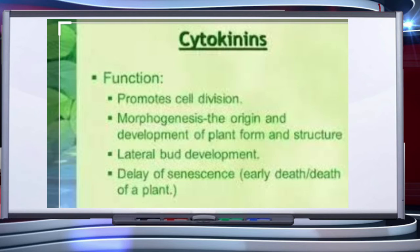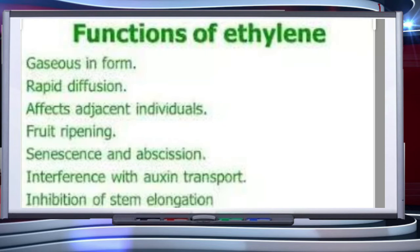Unlike auxins and gibberellins, cytokinins are non-mobile. As shown in the slide, the different functions of cytokinins include: promoting cell division, stimulating the growth of lateral buds and thus suppressing apical dominance, and delaying the aging of plant organs by controlling protein synthesis and mobilization of resources.